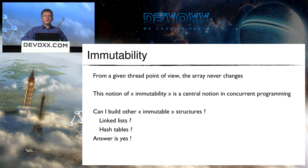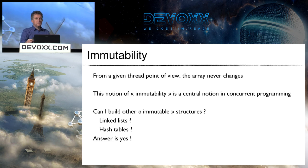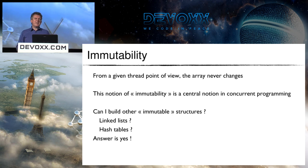Let me clarify a point from a question asked during the break: what happens if two threads modify the array at the same time? First, it's not supposed to happen because this pattern works well when there are many reads and only a few writes. So if you have concurrent writes, you're borderline in the use case of the CopyOnWriteList.